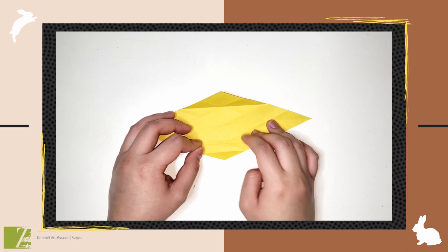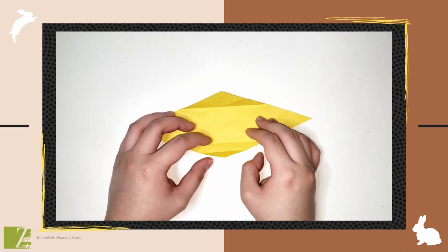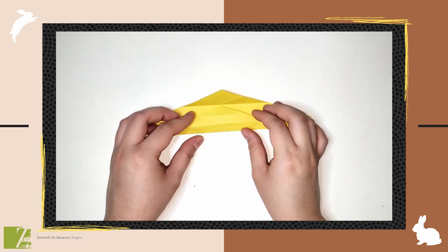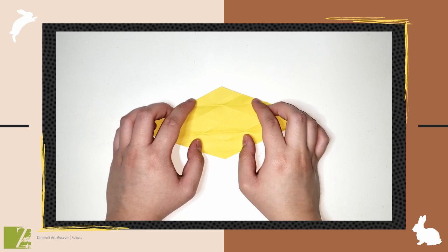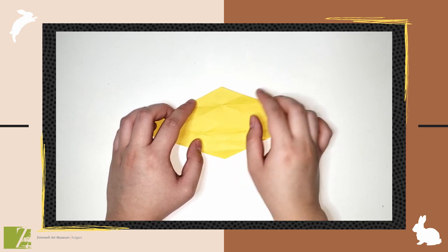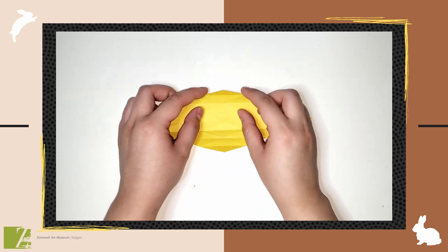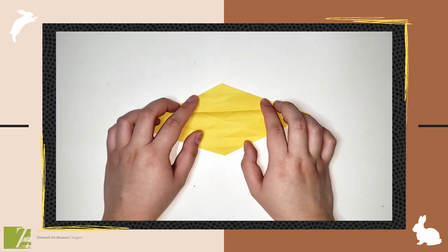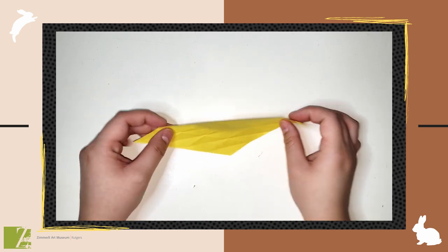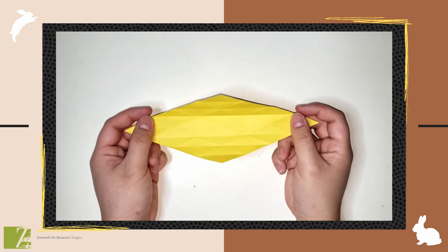Next, fold it to the top middle crease you see here. You're going to repeat the same steps but with the top corner. Fold to the middle crease here. Next, fold it to the bottom middle crease. Once you've finished folding these mini diamonds, we're going to flip one more time to the opposite side for its final stage.